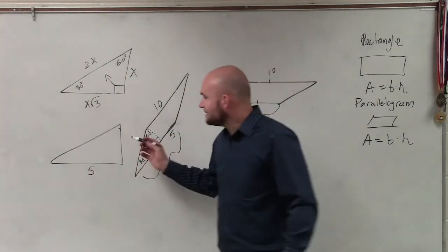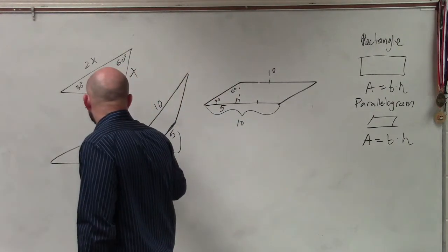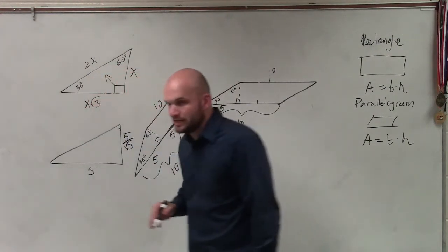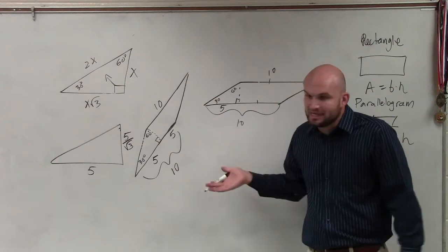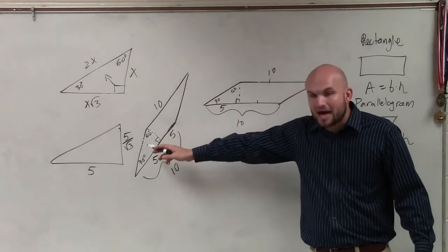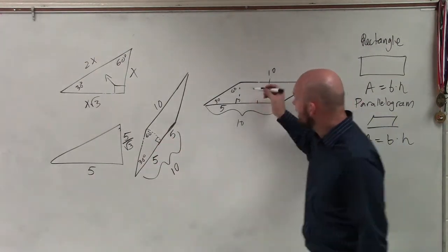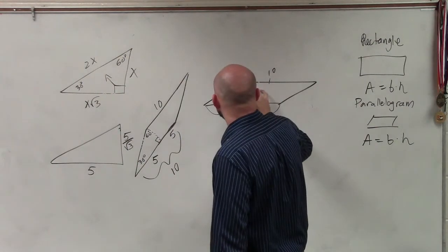So, this side length now is 5 divided by the square root of 3. That's going to be your height. Because this side is now 5 divided by the square root of 3.